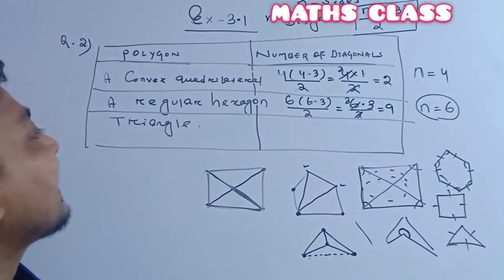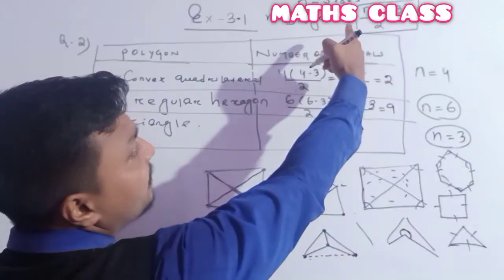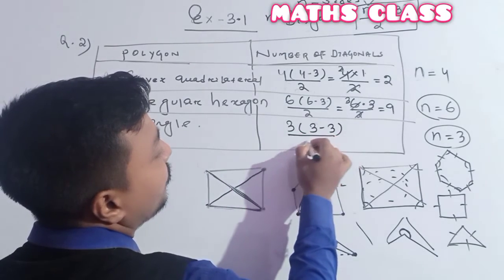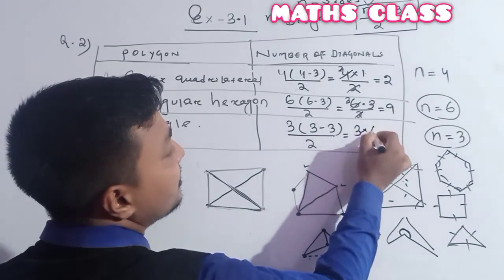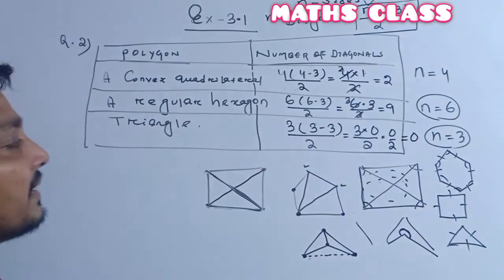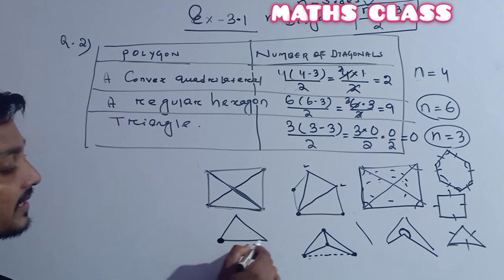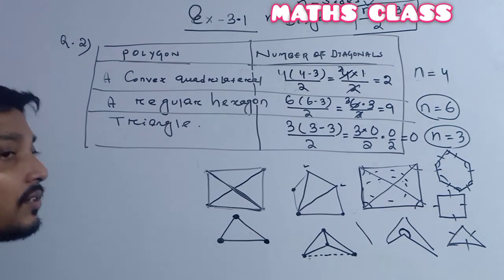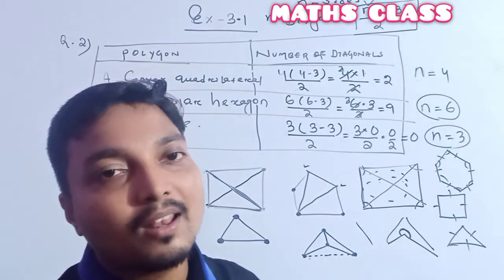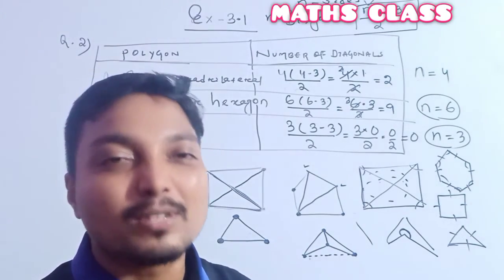Next question: triangle. A triangle has 3 sides, so n = 3. Applying the formula: 3 × (3−3) / 2 = 3 × 0 / 2 = 0. So a triangle has no diagonals. Why? Because from any vertex, the other two vertices are both adjacent — there are no non-adjacent vertices, so no diagonals can be drawn. The formula for number of diagonals is n(n−3) / 2. Thank you.